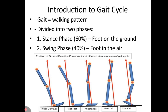Moving towards the introduction to the gait cycle: gait refers to the walking pattern divided into two phases. The first is stance phase and the second is swing phase. Stance phase is 60% of the gait cycle — the foot is on the ground — and swing phase is 40% of the gait cycle, where the foot is in the air.